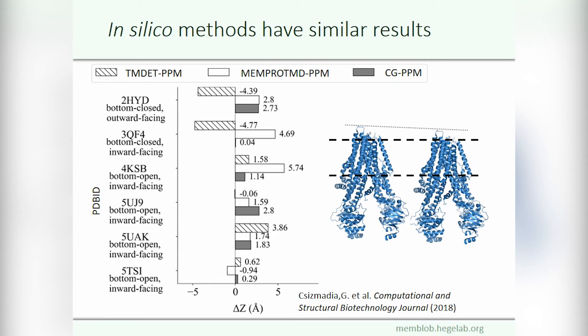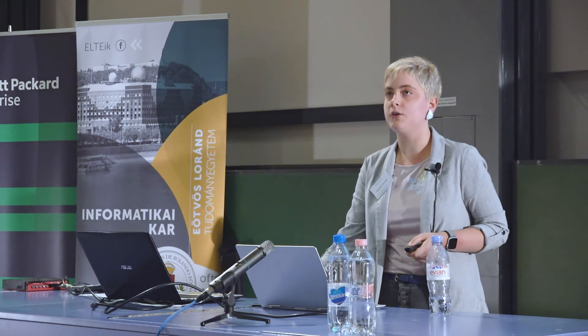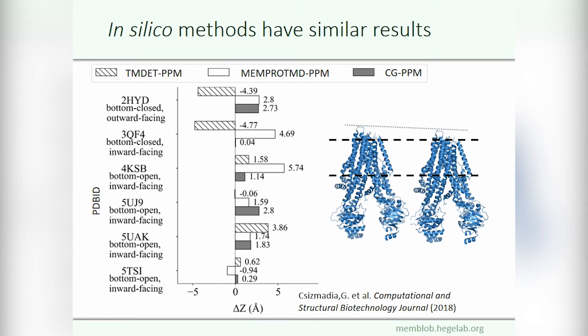Previously, we investigated the differences between membrane predictor predictions on the membrane positions along the z-axis. We compared the values from TMDat, MemProtMD, and our coarse-grained simulations to the values from PPM. Here you can see some examples of our results, showing those with the biggest differences. We found that in most cases these methods produce similar results on the membrane position.